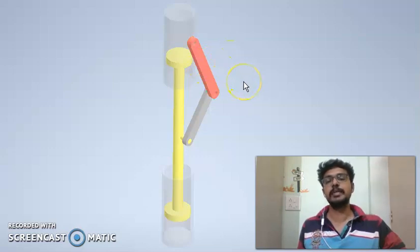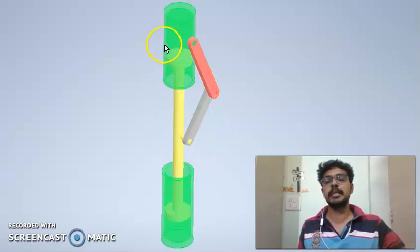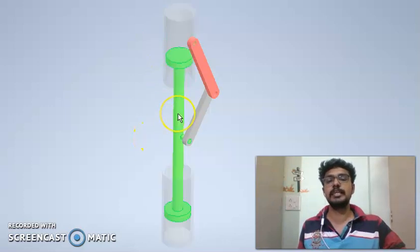Link 1 will be that link which is forming a turning pair with link 2 while a sliding pair with some other link. Since this yellow link that you see is satisfying the criteria, this is link 1.